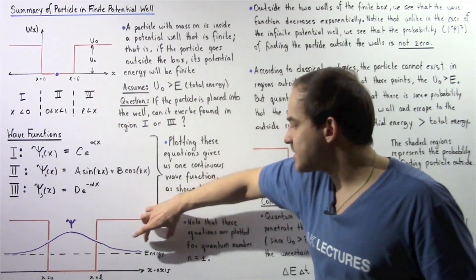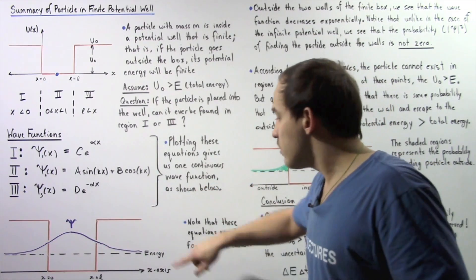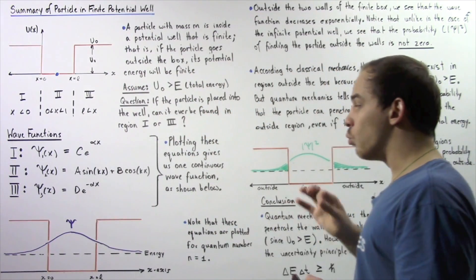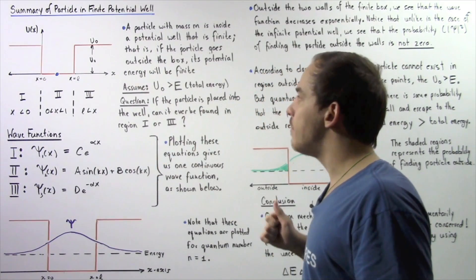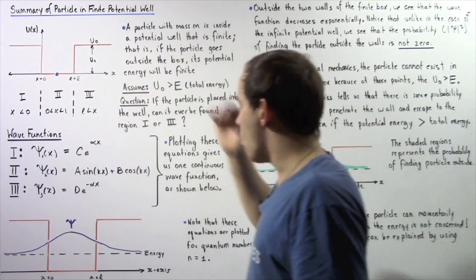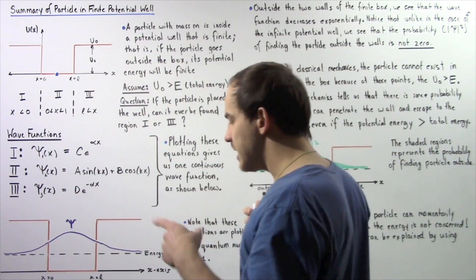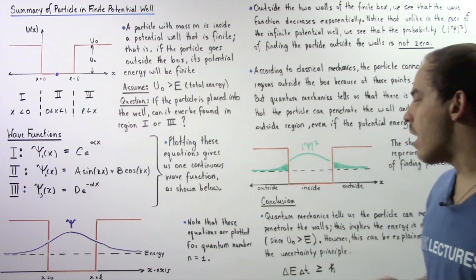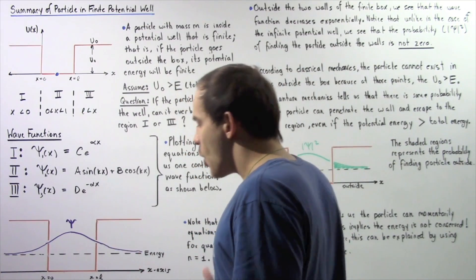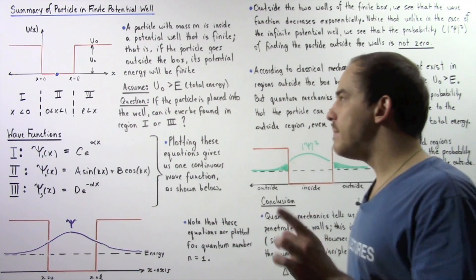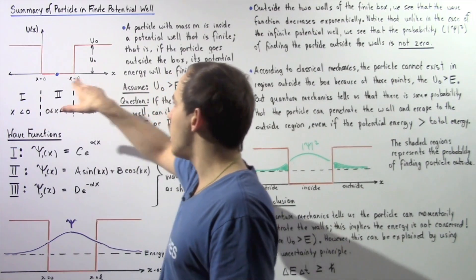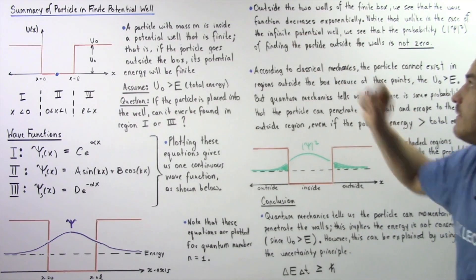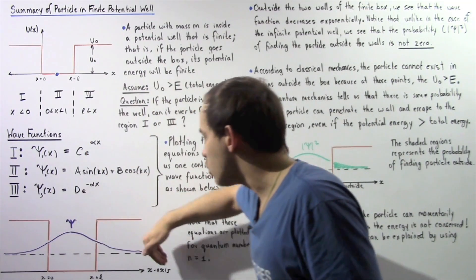The dashed line represents the minimum quantity of energy that the particle has, given by E. This energy is less than the potential energy u0 that the particle would have if found outside the box in region one or region three. We assume the quantum number of our particle is N equals 1, so these equations represent the graph for quantum number N equals 1. Outside the two walls of the finite box, we see that the wave function decreases exponentially.